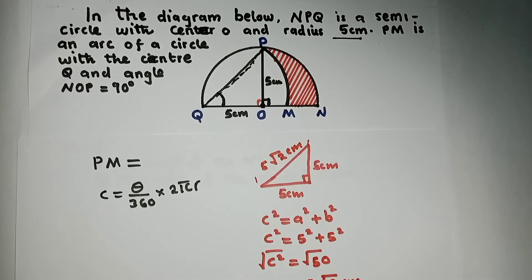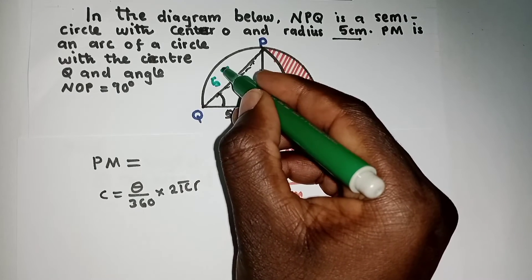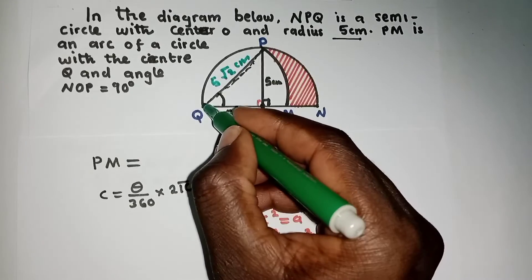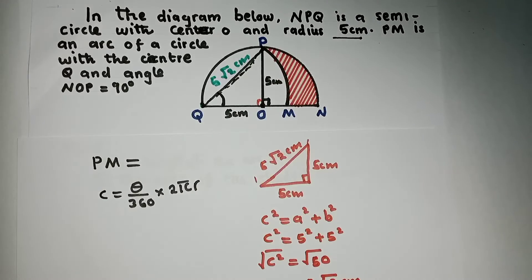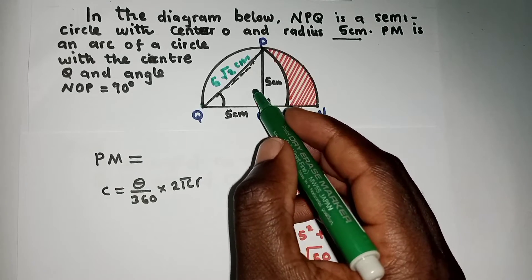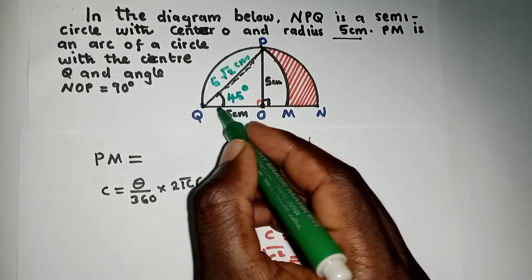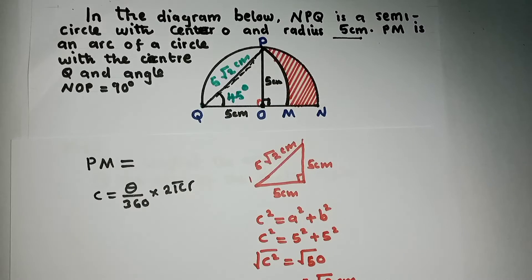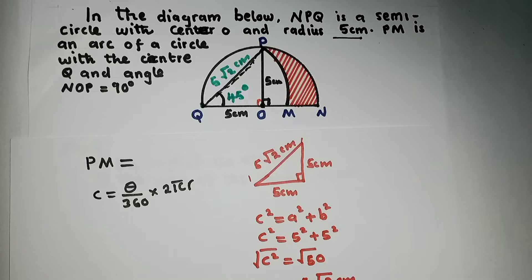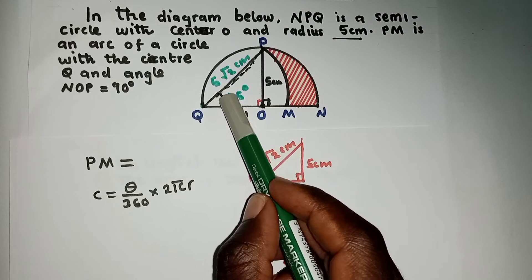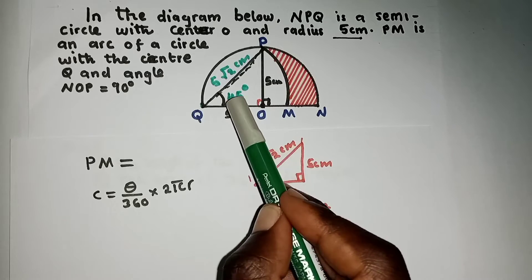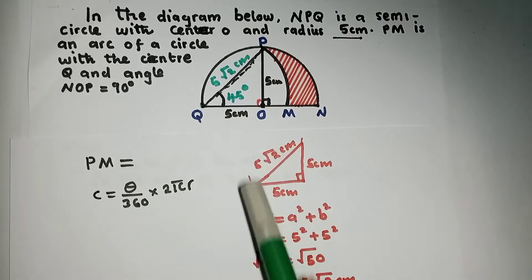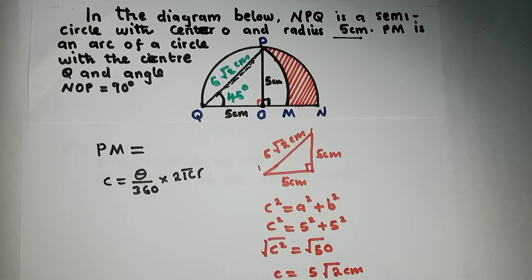So the distance from here to here is 5√2 centimeters. This side is 5 centimeters and this side is also 5 centimeters, which means this angle is 45 degrees, because these two sides are equal. In a right angle triangle with two equal sides, the angles are always 45 degrees. You can verify using SOHCAHTOA — you'll get 45 degrees. So now we have the angle.